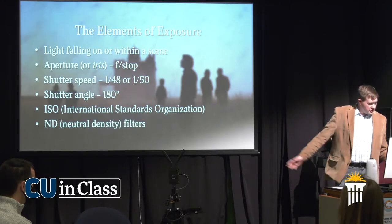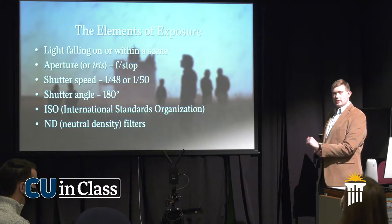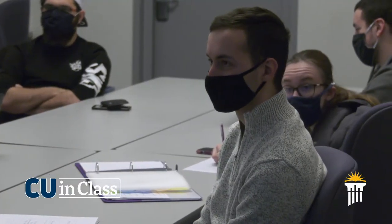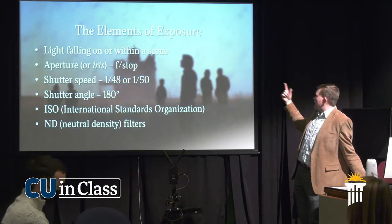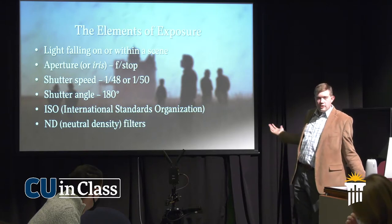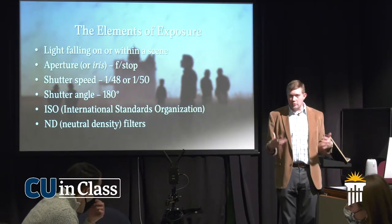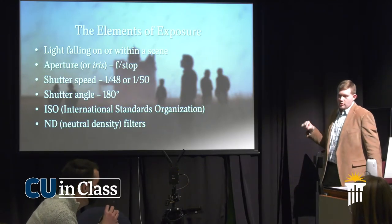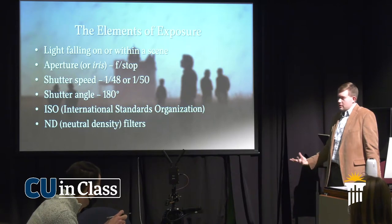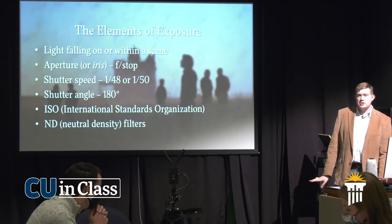And then finally, ND filters — neutral density filters. Essentially sunglasses for the camera. So you're shooting outside and you want a shallow depth of field — an f-stop of 2.8, a shutter speed of one over 50, and ISO of 100 because that's the lowest it can be — but you still have a lot of outdoor sunlight, and at this time of year a bunch of snow on the ground adding to that reflective control. ND filters that you either screw onto the top of the lens or that this camera has built in with a little switch are going to help you maintain a shallow depth of field.